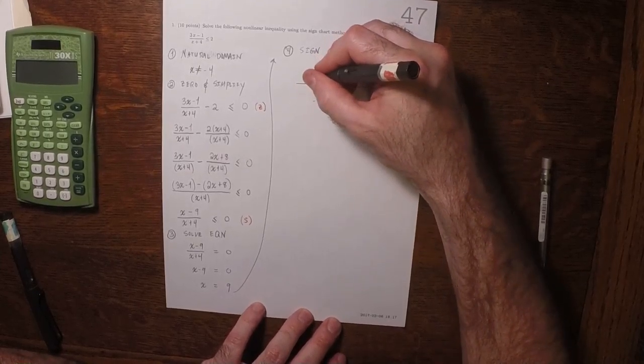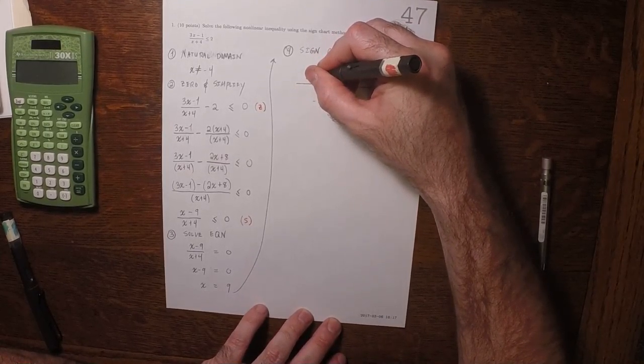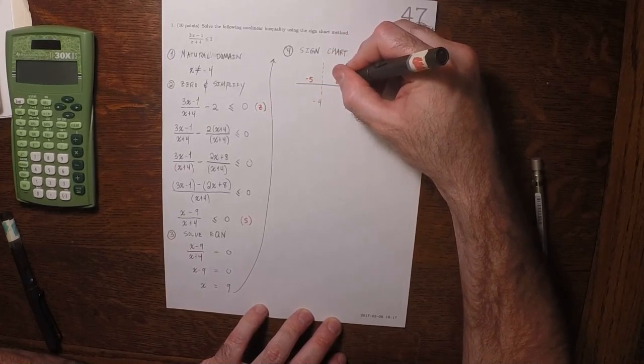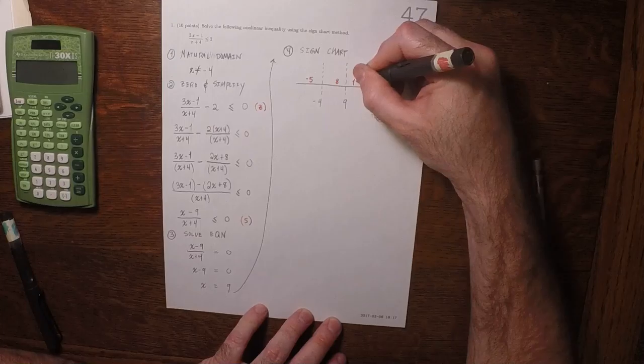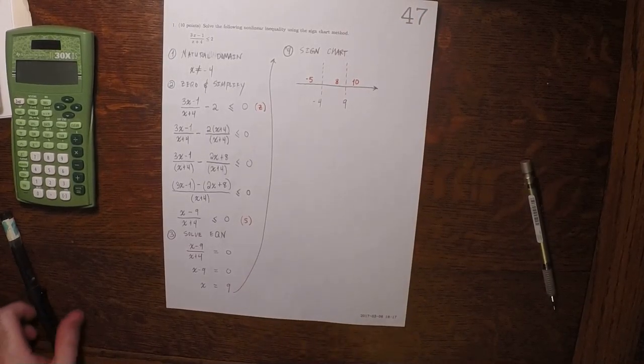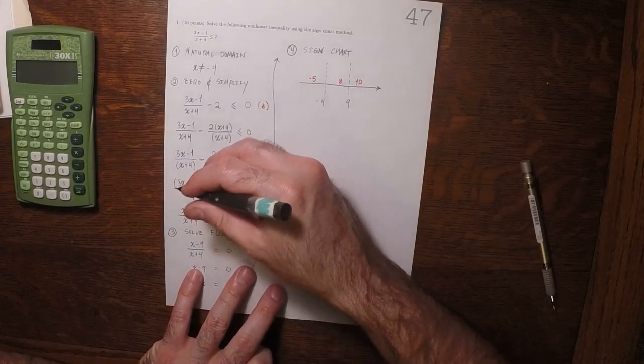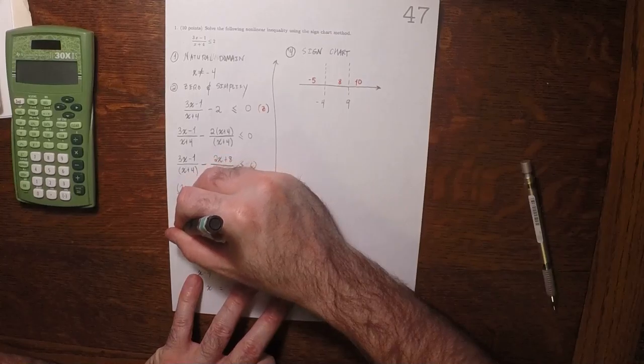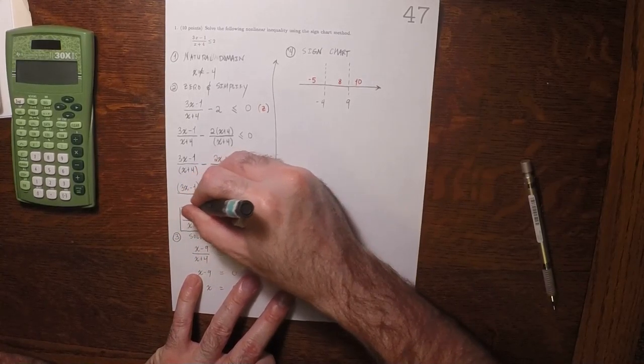A test point over here is negative 5. A point in here is 8, and a point in here is 10. Now we're going to take those values and evaluate this expression.